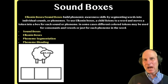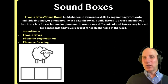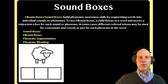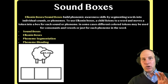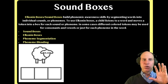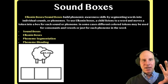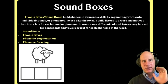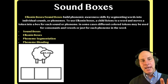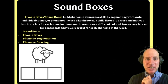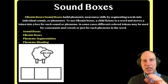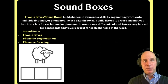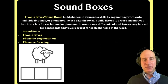Sound boxes, also called Elkonin boxes — you've seen this before, I'm sure. With a sound box or Elkonin box, you're usually given a picture, so there don't have to be any words attached. Usually it's a picture. The child right away sees that it's a sheep, and from there the child segments the sounds using the boxes to help them isolate the individual sounds in a word.